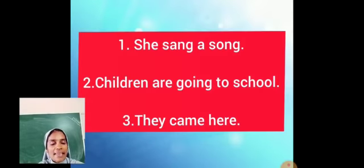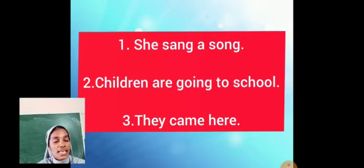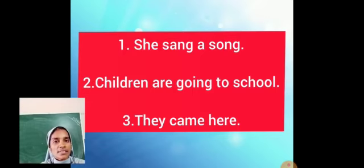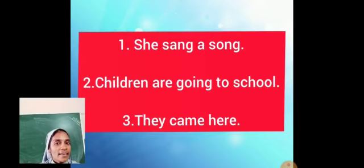We can see some more examples. She sang a song. Children are going to school. They came here. Please look at the first example: She sang a song. Here, she is the subject, sang is the verb. To find the object, you have to ask a question to the verb: what? What did she sing? A song — that is the object here.